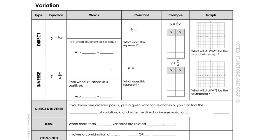The first one is direct variation. Direct variation is where we have the equation y equals something times x — a constant times x. This is where y varies directly as x. In terms of real-world situations, as x increases, y increases — that's when k is positive. To find that k value, the constant, we take y divided by x. That's how we find our constant of variation, and this represents the ratio or the slope that the function has.